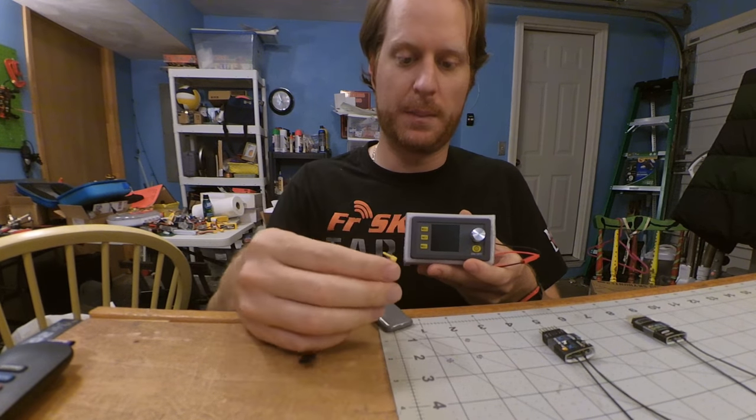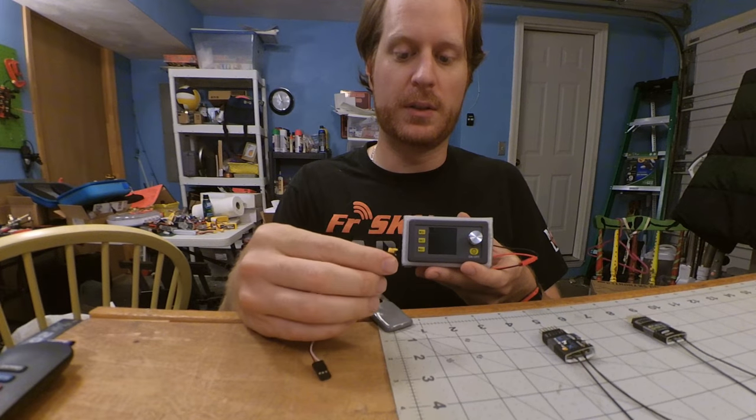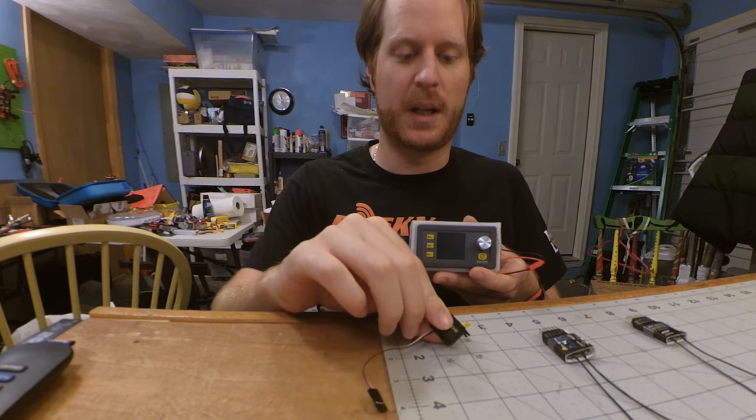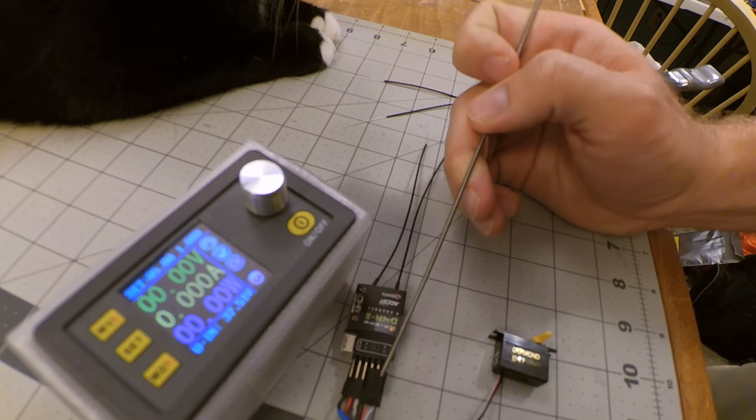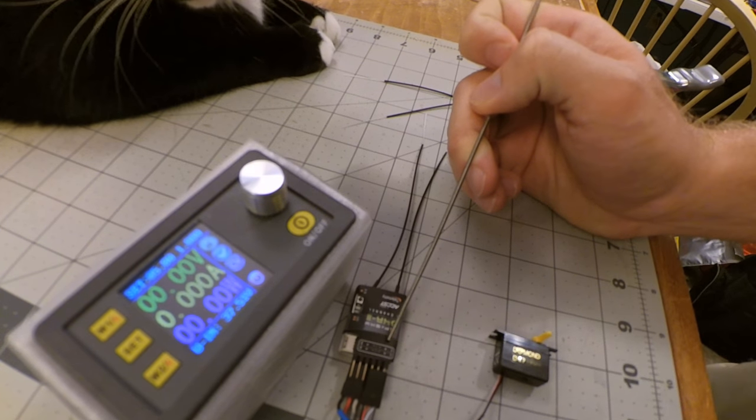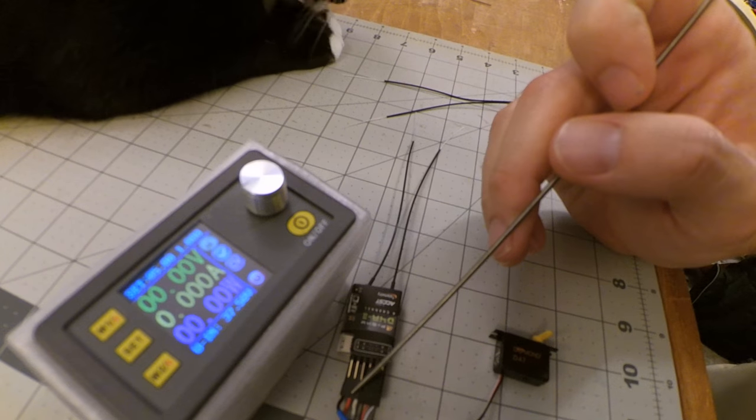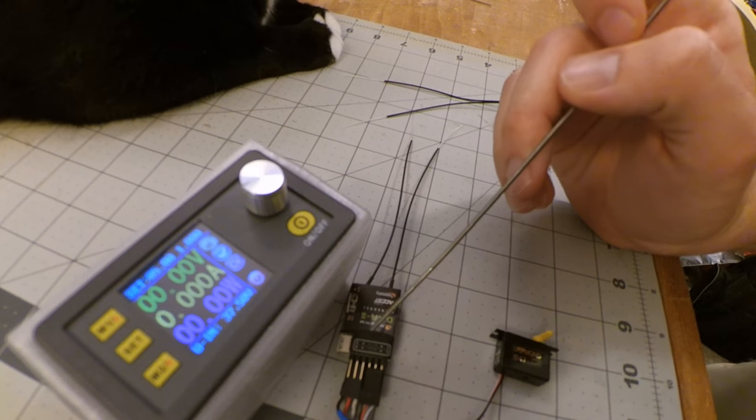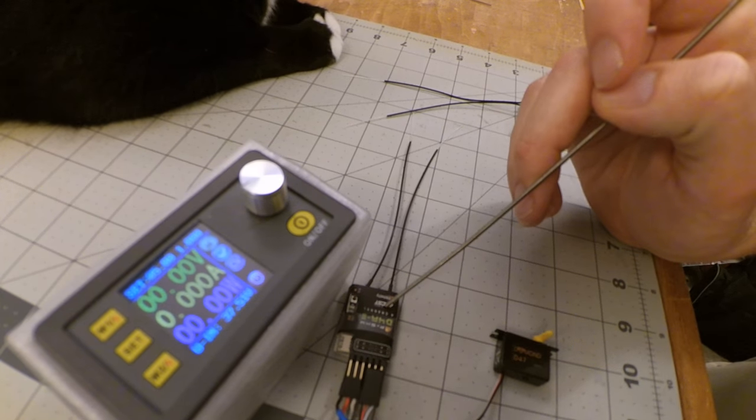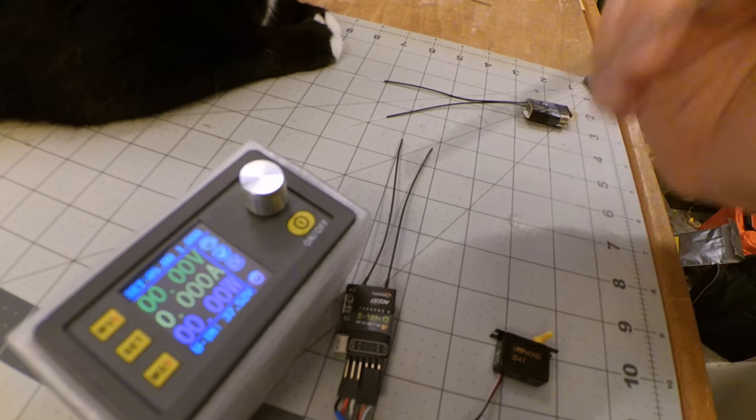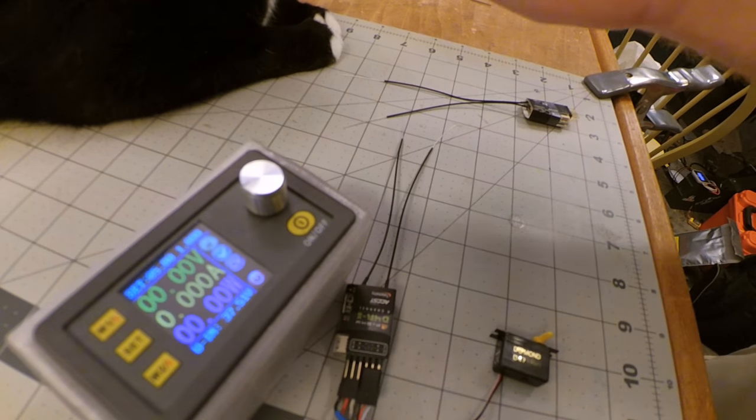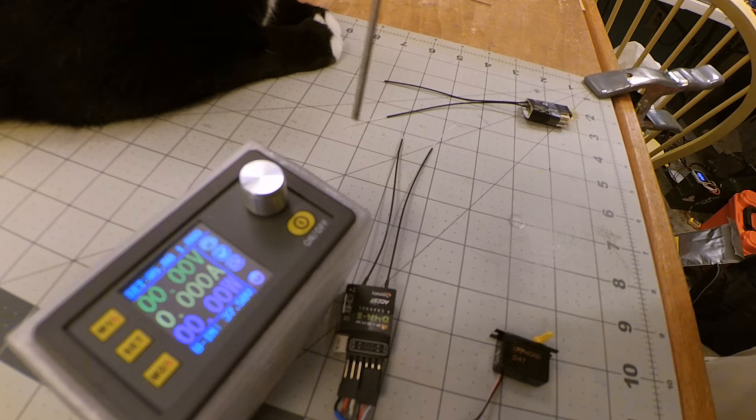Here we have the servo hooked up to channel one. We've got the power hooked up on channel four. We've got the receivers already bound for the D4R2, and we've got it plugged into my voltage regulation system.